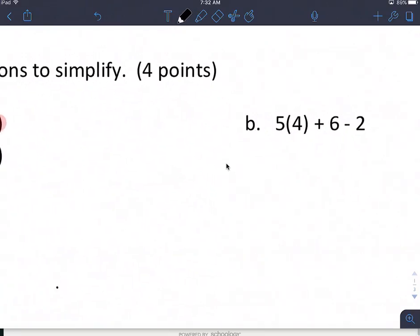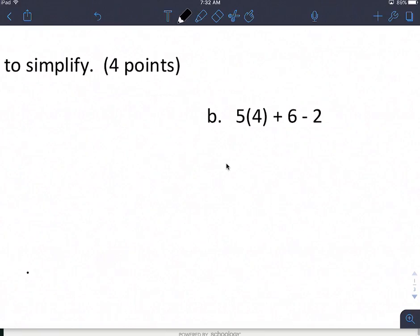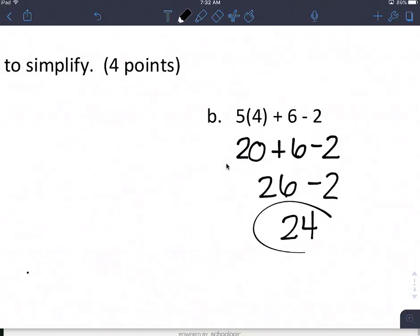I'm going to do the same thing over here. 5 times 4 is 20. So 6 minus 2. I just have addition and subtraction left, so I'm going left to right. 20 plus 6 is 26, minus 2 is 24.